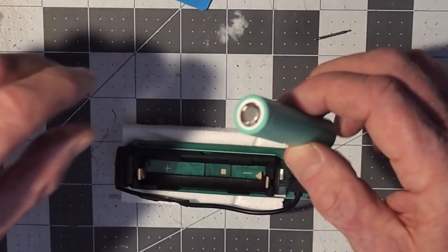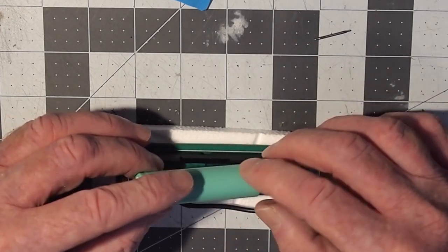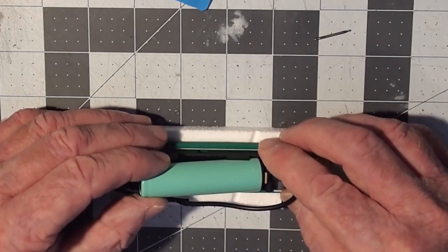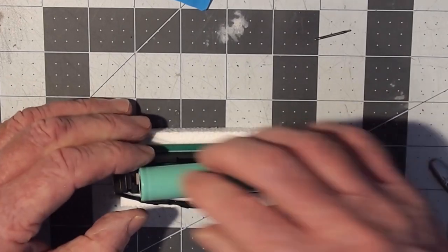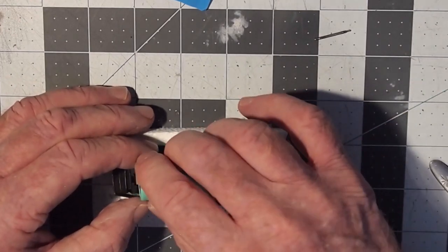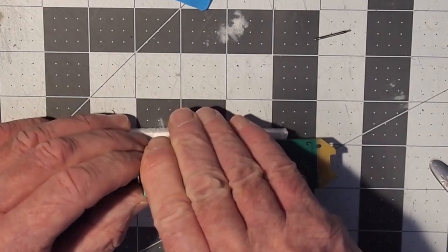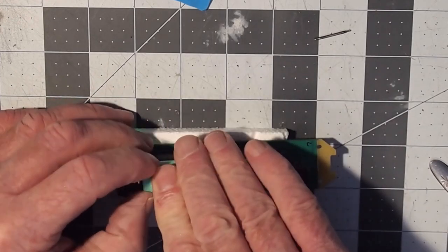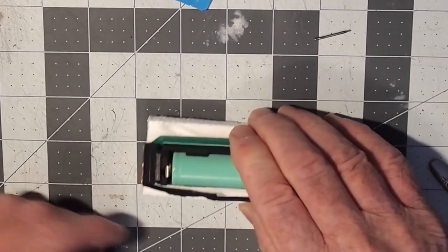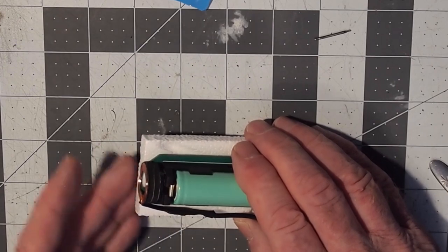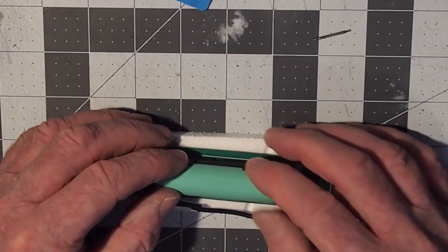So what I normally would do is, it's a tight fit, so I place the negative end in, push it back down toward the end of the battery cable, and then gently apply pressure and slowly work the battery back in. And I don't know if you could see that reflected or not, but a green LED flashed when the battery made connection.